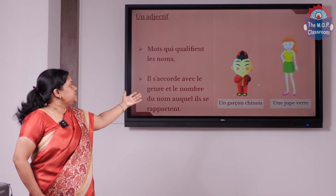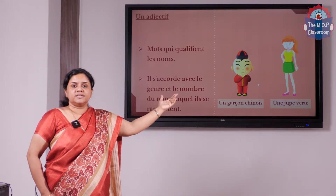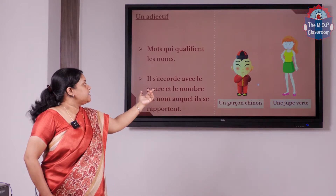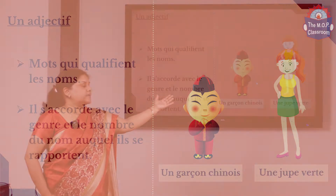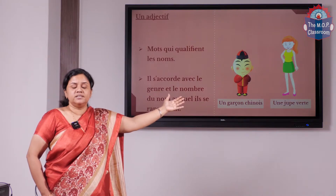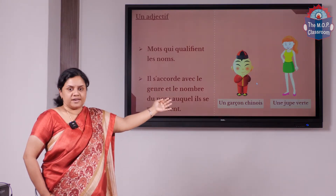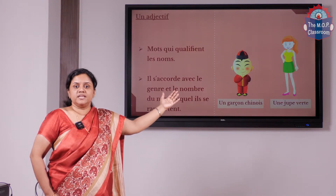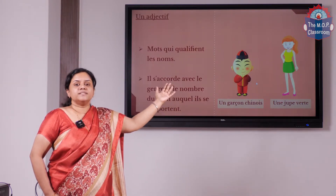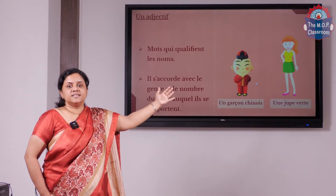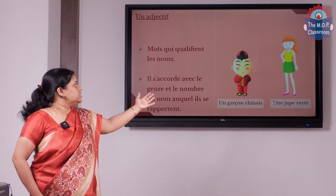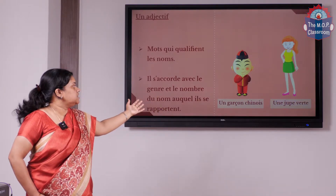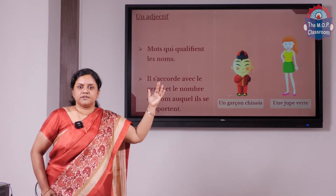The next example is une jupe verte — that is a green skirt. The word jupe is feminine singular, so the feminine form of vert, which is verte, is used — we add an E. Usually the word is vert, V-E-R-T, but because it is feminine, we add an E to make it verte. So: une jupe verte and un garçon chinois — these are the two examples.